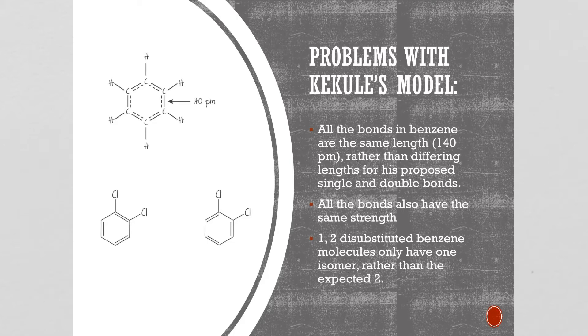There are a few problems with Kekule's model and as we know more about bonds and molecules we've realized that his proposal was incorrect. We now know that all the bonds in benzene are the same length, 140 picometers, rather than the differing lengths for his proposal of single and double alternating bonds. Also all the bonds have the same strength and a single and a double bond have differing strengths. And if you have 1,2-disubstituted benzene molecules they only have one isomer rather than the expected two.